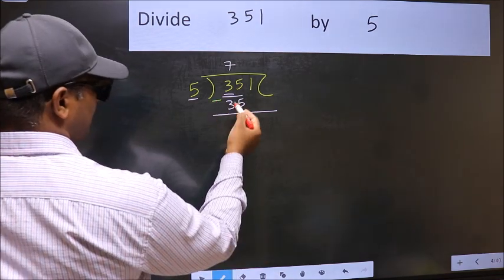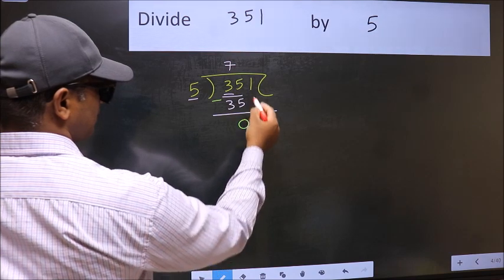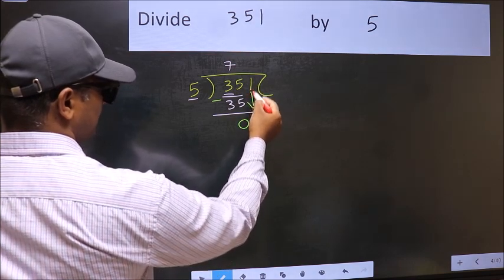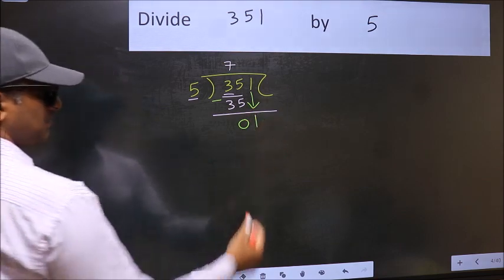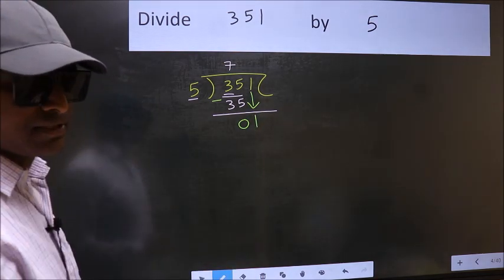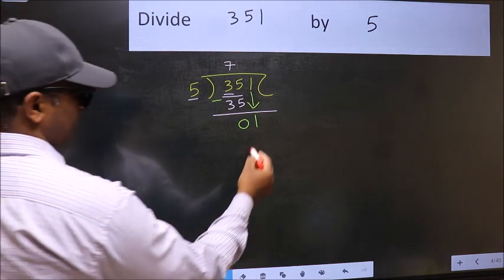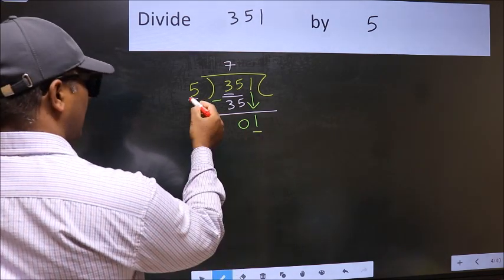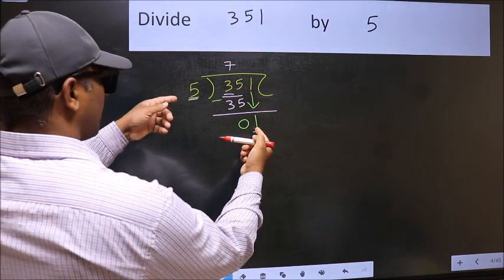After this step, the mistake happens, and the mistake is this: here we have 1 and here 5. 1 is smaller than 5.